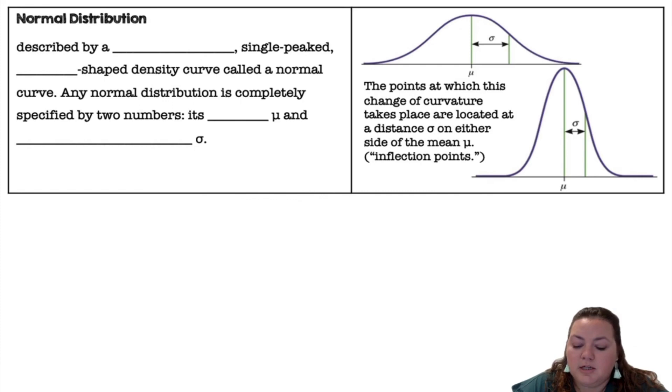A normal distribution is described by a symmetric single peak bell-shaped density curve called the normal curve. Any normal distribution is completely specified by two numbers, its mean mu and its standard deviation sigma. The points at which the change in curvature takes place are located at a distance sigma on either side of the mean. Those are your inflection points.